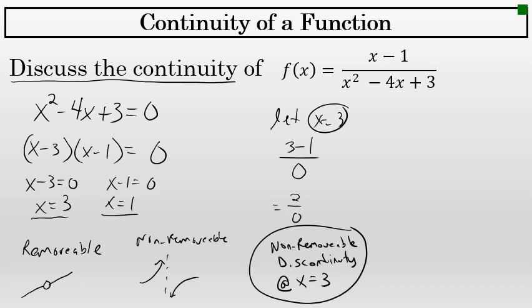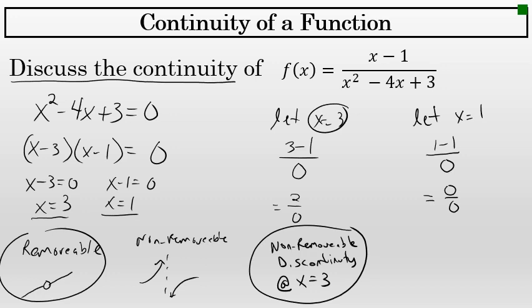There is also a discontinuity at x = 1. Is it removable or non-removable? We'll let x = 1 and substitute that into the original function. Since 1 made the denominator 0, substituting gives a numerator of 1 - 1, which yields 0/0. An x value that yields 0/0 implies a removable discontinuity — this is an x value where the limit would exist, but there would be a gap in the graph. There is a removable discontinuity at x = 1.